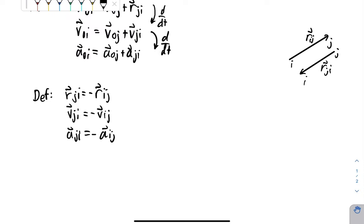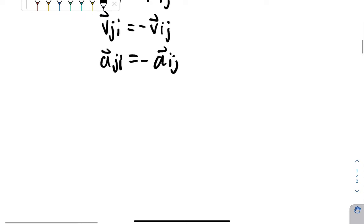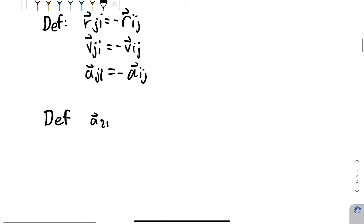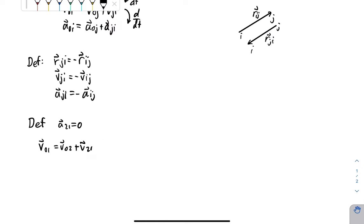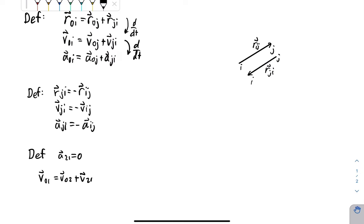And again, if we can say that the acceleration is zero, then we're allowed to make the Galilean transformation. So we can use the Galilean transformation. Here's another definition. Given that the acceleration between point two and point one is zero, we can make the following statement: V sub 01 is equal to V sub 02 plus V sub 21.